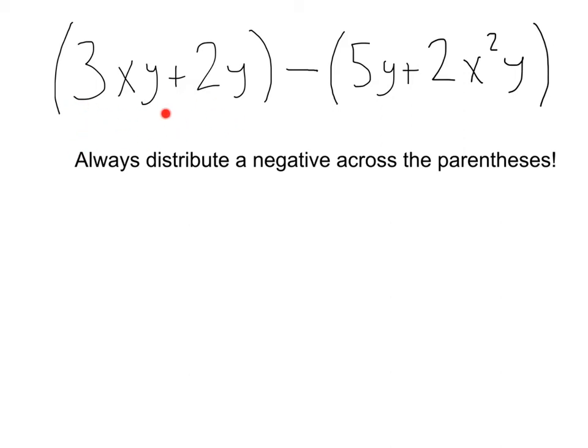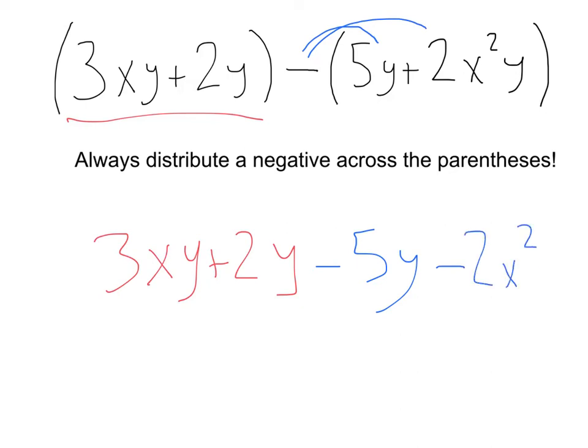Let's start by just rewriting this front part. So we're still going to have 3xy plus 2y. Now instead of doing minus 5y plus 2x squared y, we're going to distribute this negative out. So we'll have negative 5y distribute minus 2x squared y. So see that? This negative had to get distributed across the whole parentheses, just like you would do any distribution.